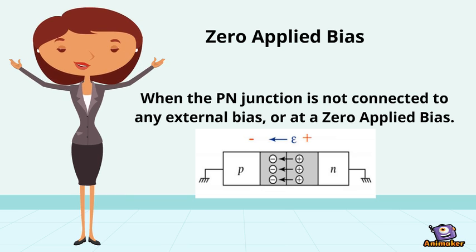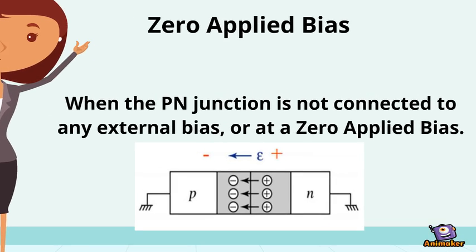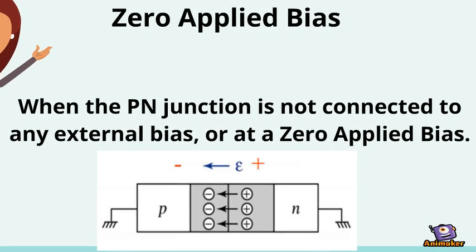Let's understand what happens when the P-N junction is not connected to any external bias, or at a zero applied bias.